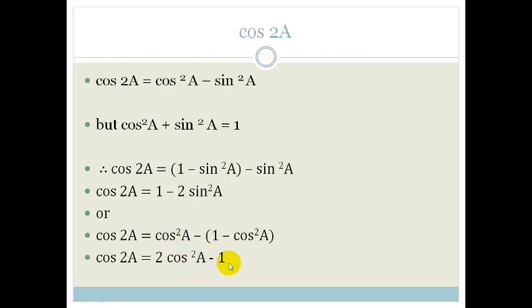So there you can see that we've actually got that option there, 2 cos²A minus 1. We've got this option here, cos 2A is 1 minus 2 sin²A,